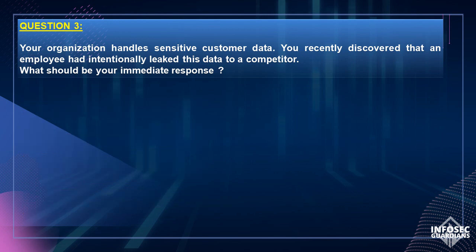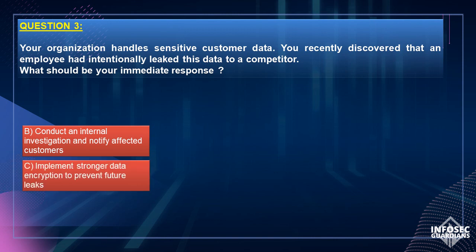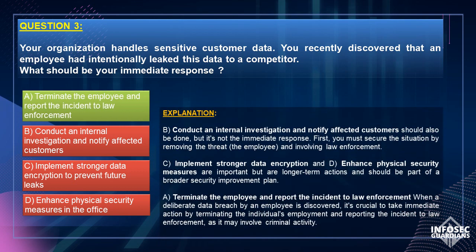Let us review each option one by one. Option B, Conduct an internal investigation and notify affected customers, should be done, but it's not the immediate response. First, you must secure the situation by removing the threat — the employee — and involving law enforcement. Option C, Implement stronger data encryption, and Option D, Enhance physical security measures, are important but are longer-term actions and should be part of a broader security improvement plan. Option A, Terminate the employee and report the incident to law enforcement: when a deliberate data breach by an employee is discovered, it's crucial to take immediate action by terminating the individual's employment and reporting the incident to law enforcement, as it may involve criminal activity. Hence, Option A is the correct answer.